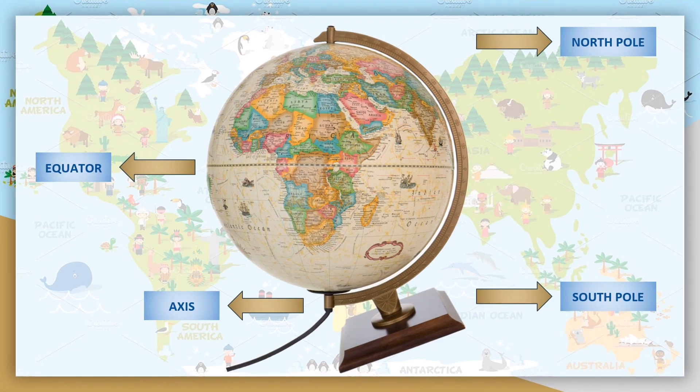If I talk about the appearance of the globe, here it is. The upper part is north pole, the lower part is south pole, the center part is equator, and it moves in its own axis.